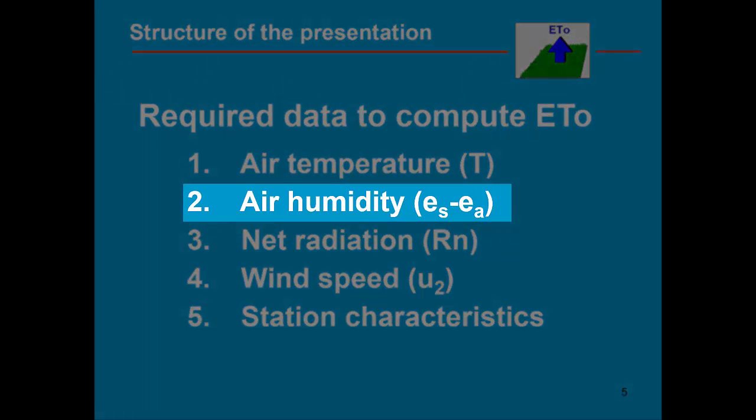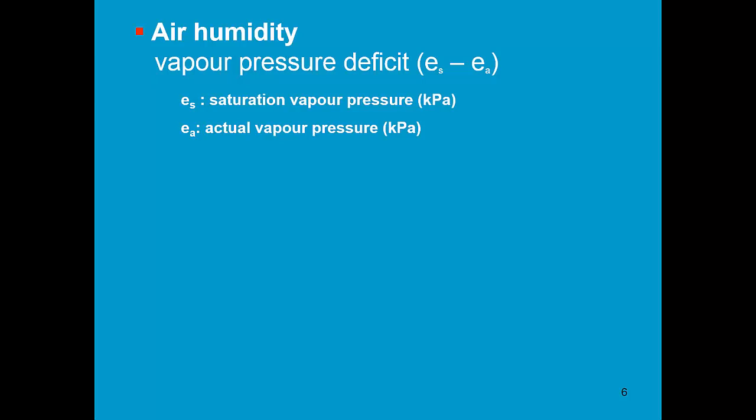Air humidity is expressed as a vapor pressure deficit — the difference between the saturation and the actual vapor pressure. You are likely familiar with atmospheric pressure, which is the pressure of the mass of the atmosphere on the surface of the Earth, about 100 kPa. Vapor pressure is similar, but considers only the mass of the water molecules. As such, it is a very good indicator of air humidity, because if you add or remove water molecules, the mass changes and the vapor pressure changes as well.